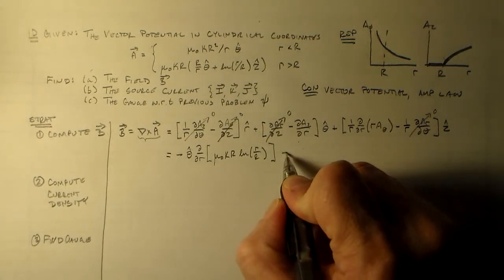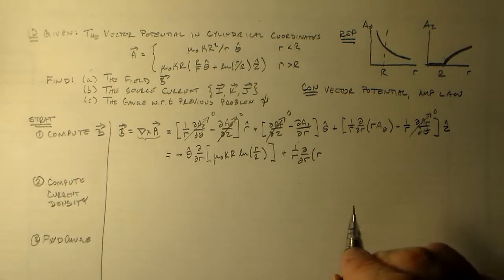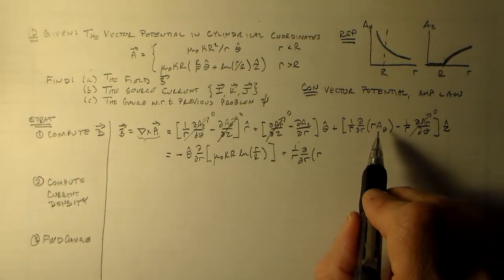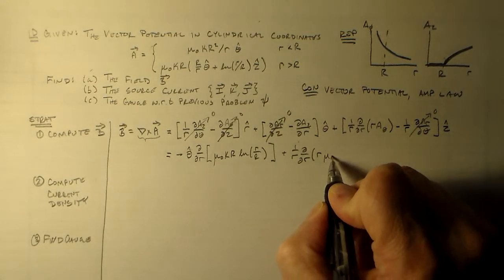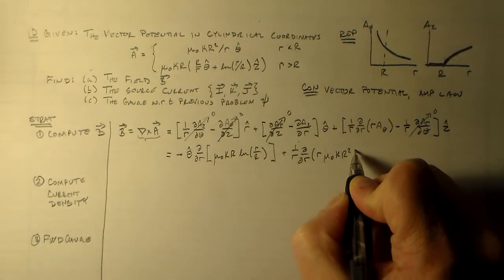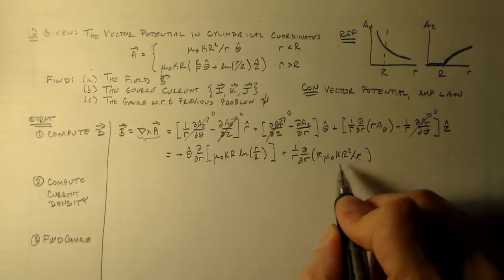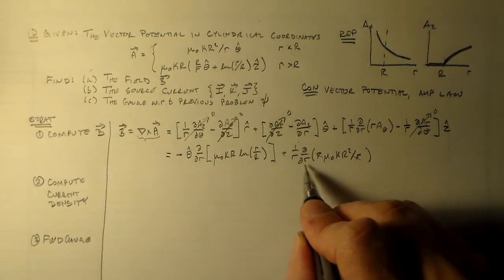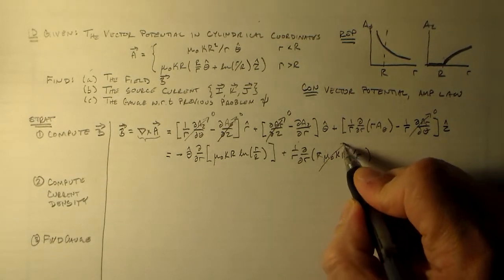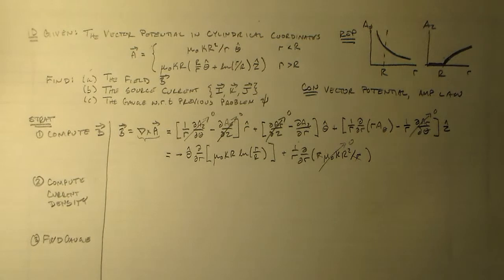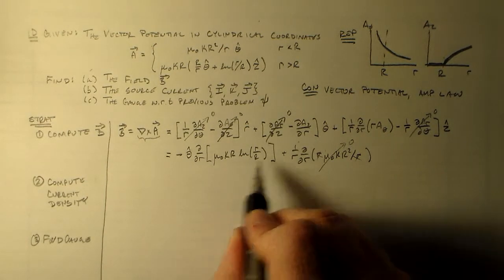And then we have plus one over r d dR of r times A theta, which is mu naught k big R squared over r. So these things cancel. We have a derivative of a constant in a continuous region, so that's zero. It's important this is continuous. We'll look at the other case in a moment. Then we take this derivative, and that gives us minus mu naught k R over r.